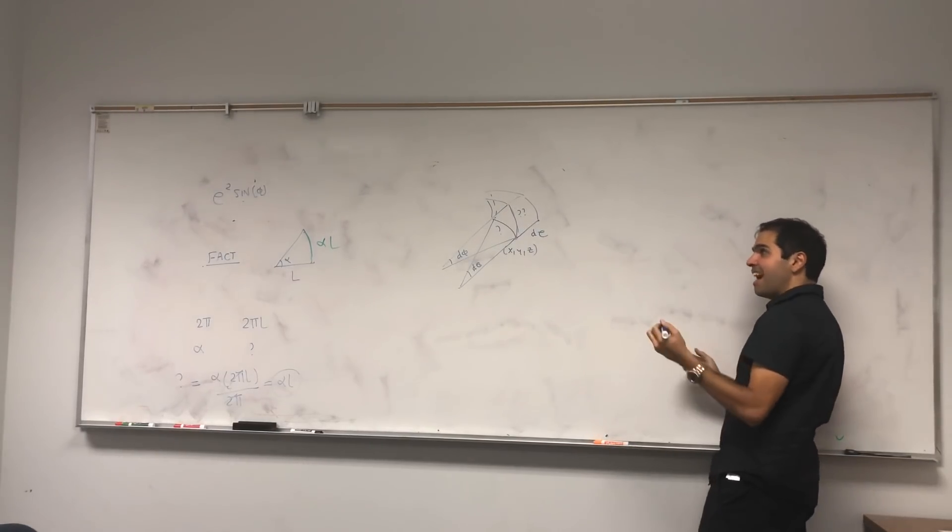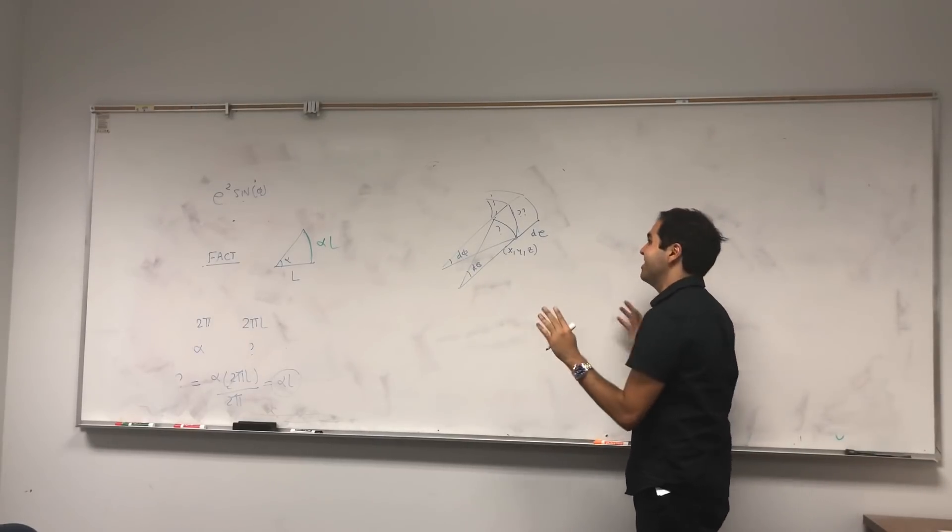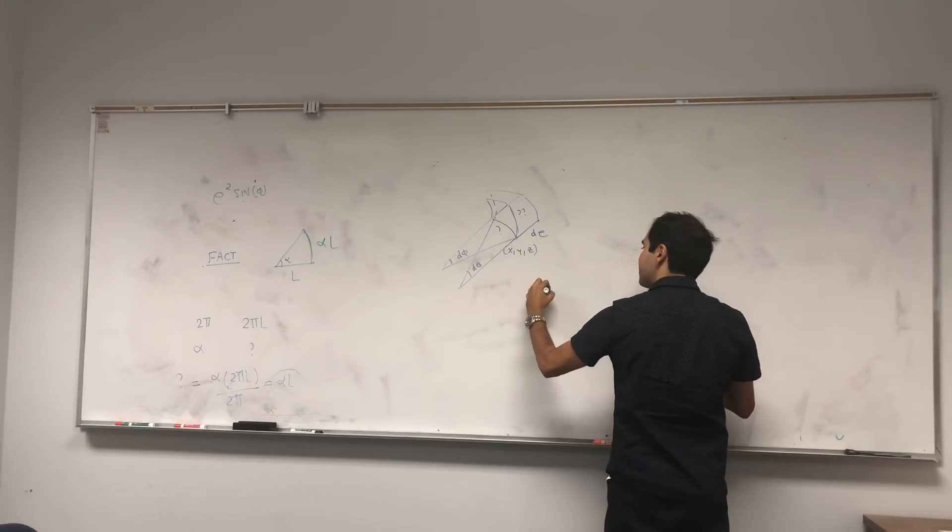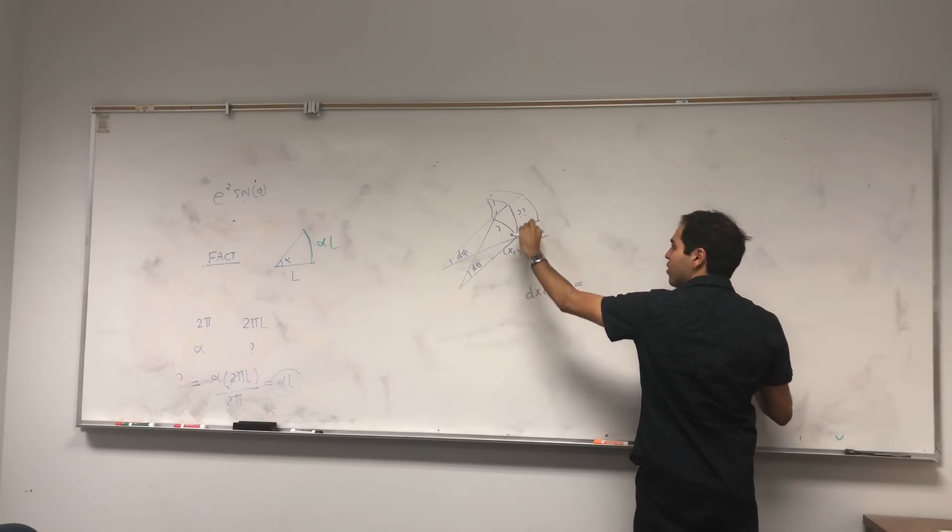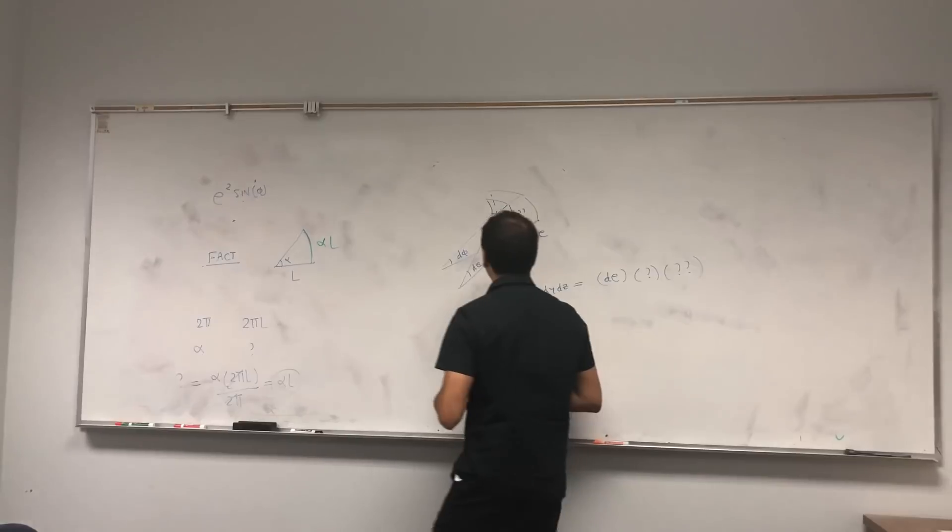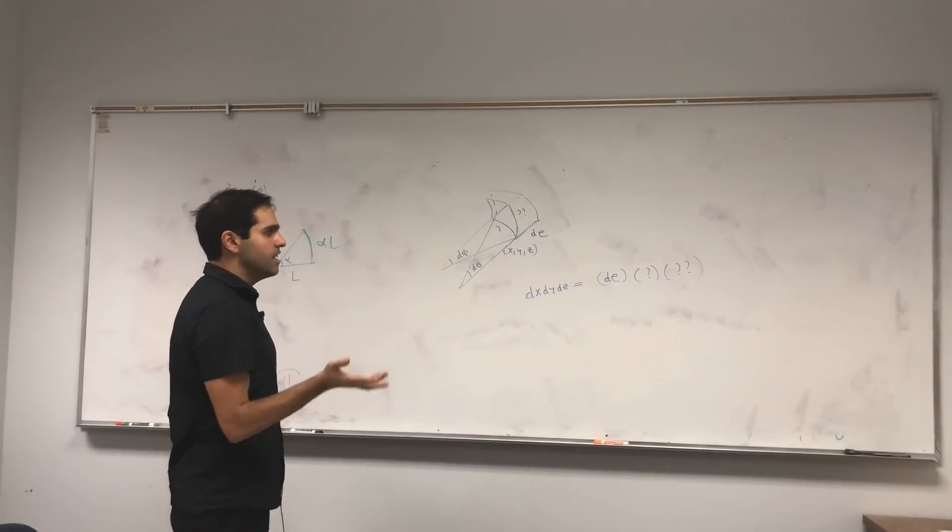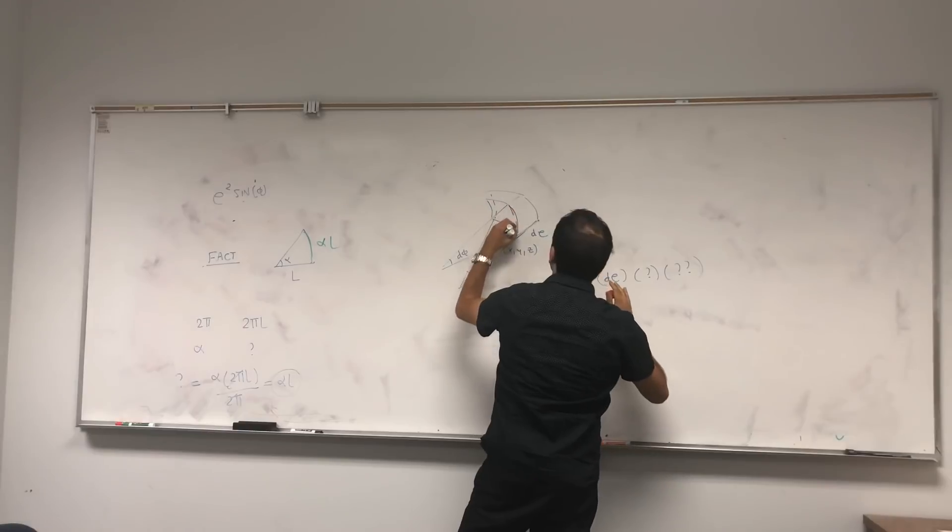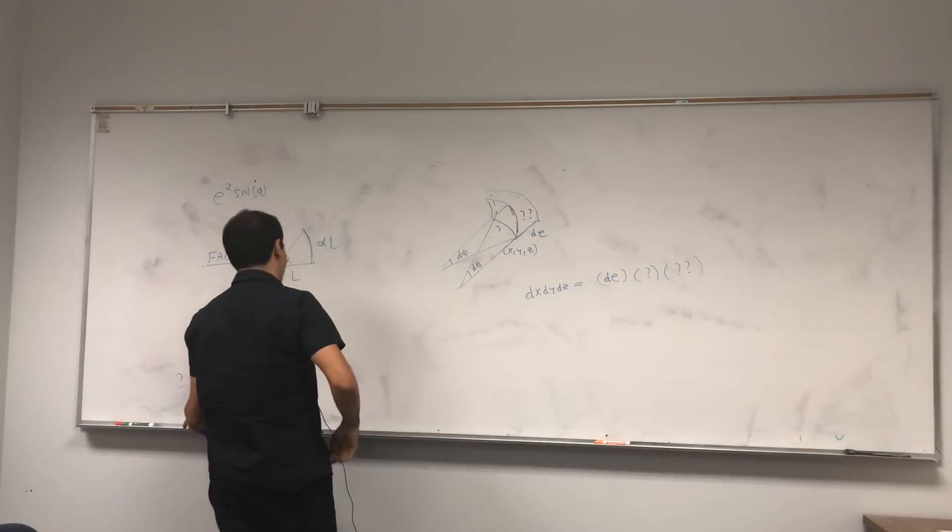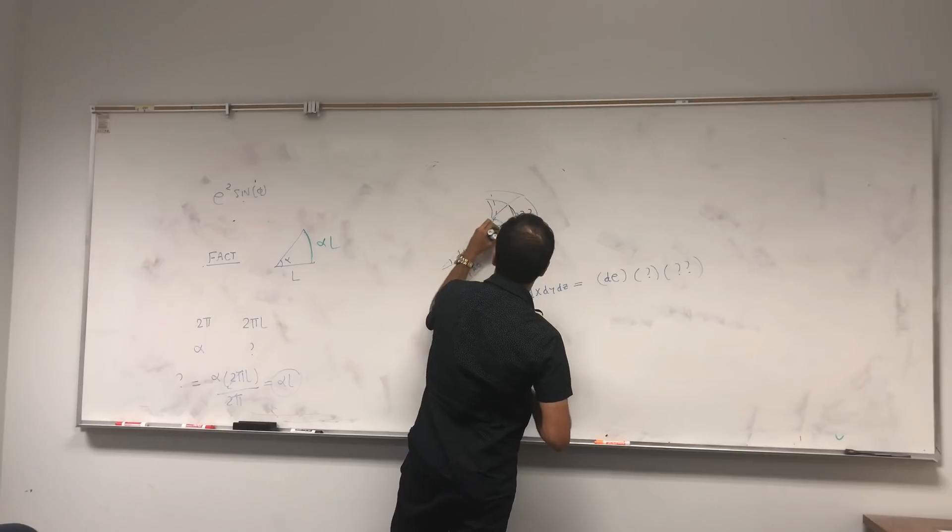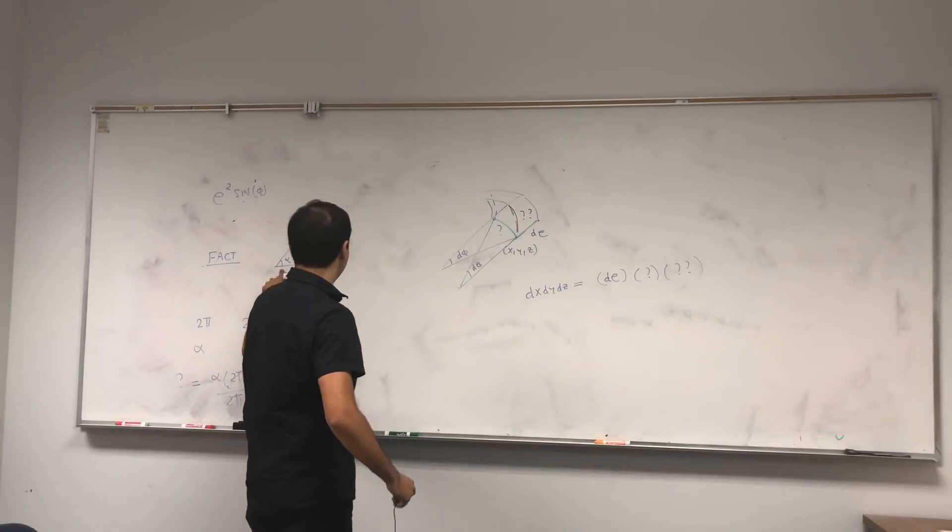Then, the idea is, assuming it's a rectangle, which isn't quite really, but assuming this is a rectangle, then the volume of this thing, so if you want dx, dy, dz, equals to, well, first of all, this length d rho, times question mark, times question mark, question mark. And the idea is simply, how do we find this length? How do we find this length? And how do we find the other length here? Okay, and for this, we need this little thing.